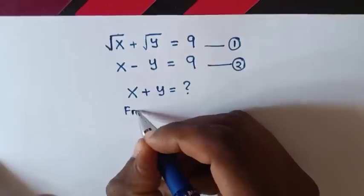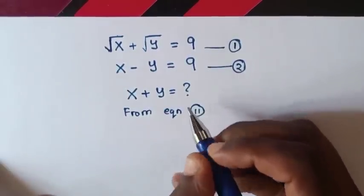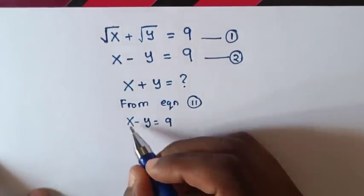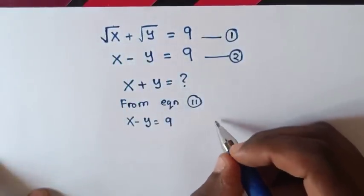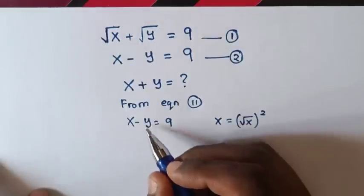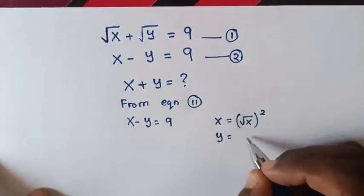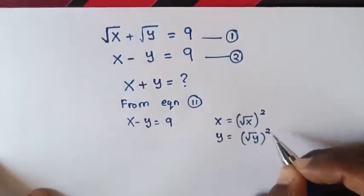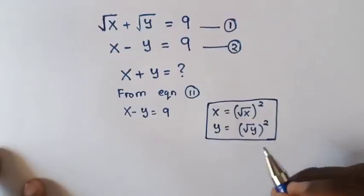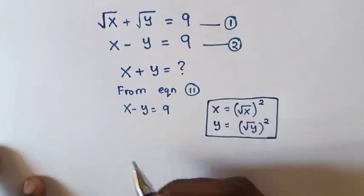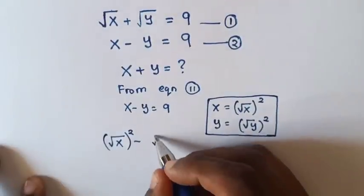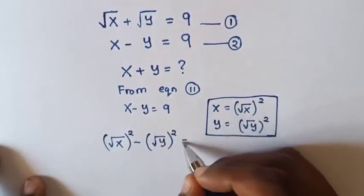From equation 2, which is x minus y equals 9, we rewrite x as square root of x, the whole bracket squared, and y as square root of y, the whole bracket squared. Substituting this in, our equation becomes: square root of x, bracket squared, minus square root of y, bracket squared, equals 9.